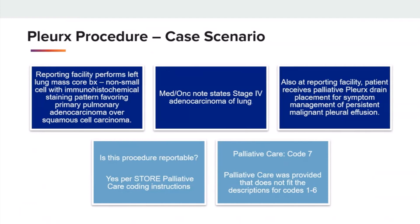Our case scenario starts off at the reporting facility, where they perform a left lung mass core biopsy. It shows non-small cell with immunohistochemical staining pattern favoring primary pulmonary adenocarcinoma over squamous cell carcinoma. The medical oncologist note states stage 4 adenocarcinoma of the lung. Also at the reporting facility, the patient receives palliative Plurax drain placement for symptom management of persistent malignant pleural effusion.